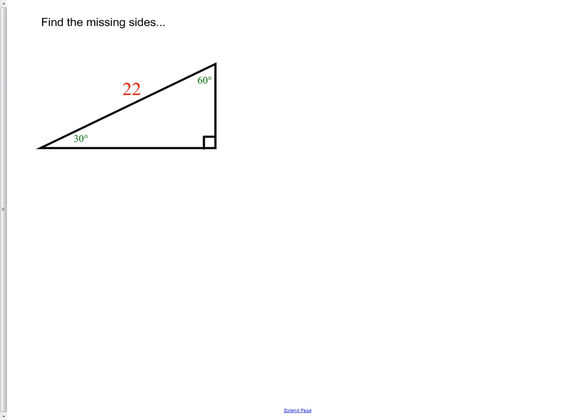Well I know across from the 30 is where I'm going to find the n. Across from the 60 is where I find n root 3. Lastly, across from the 90 is where I find the 2n.